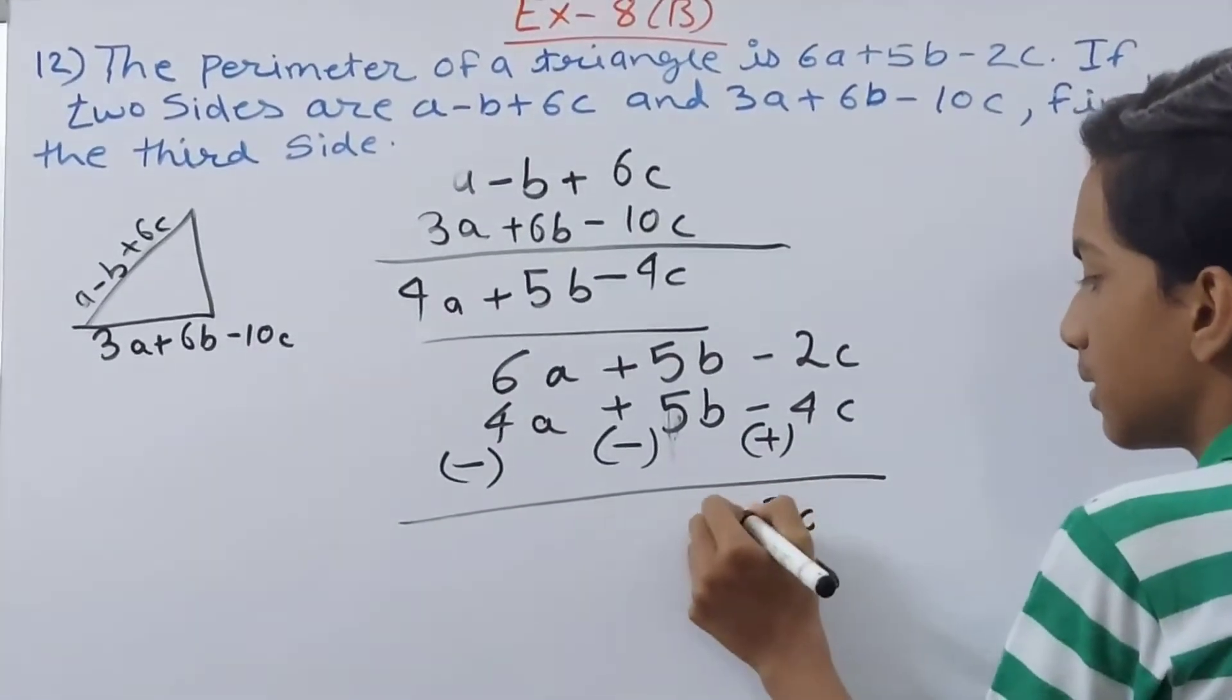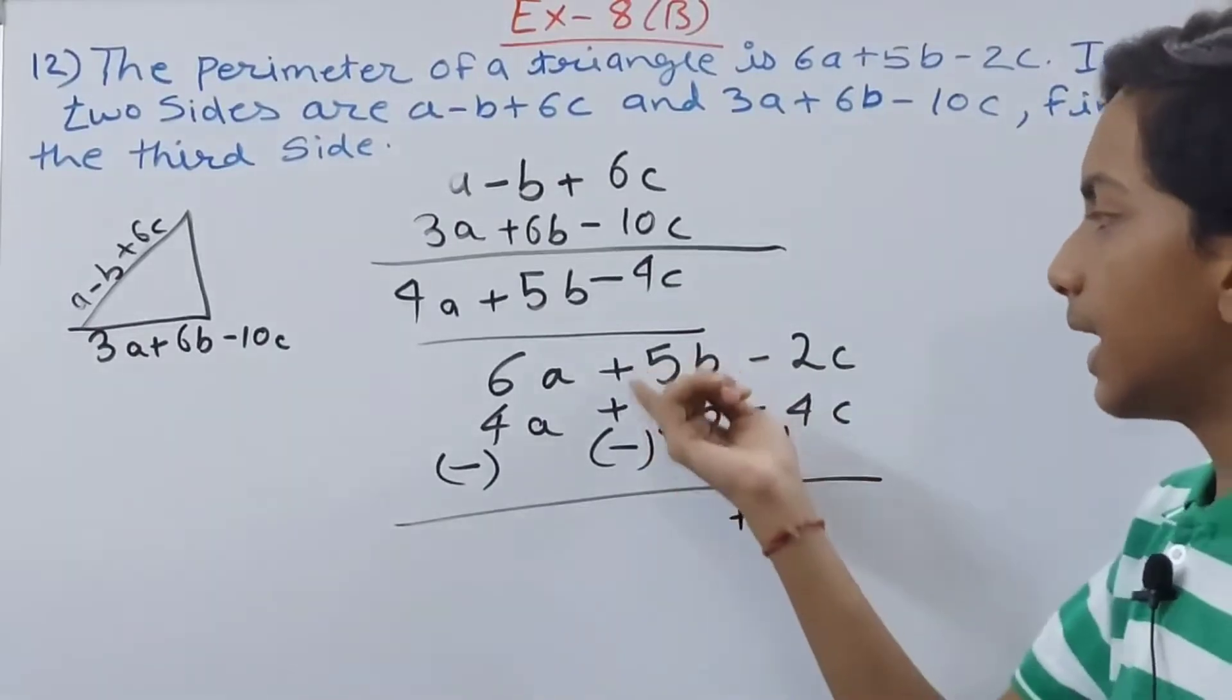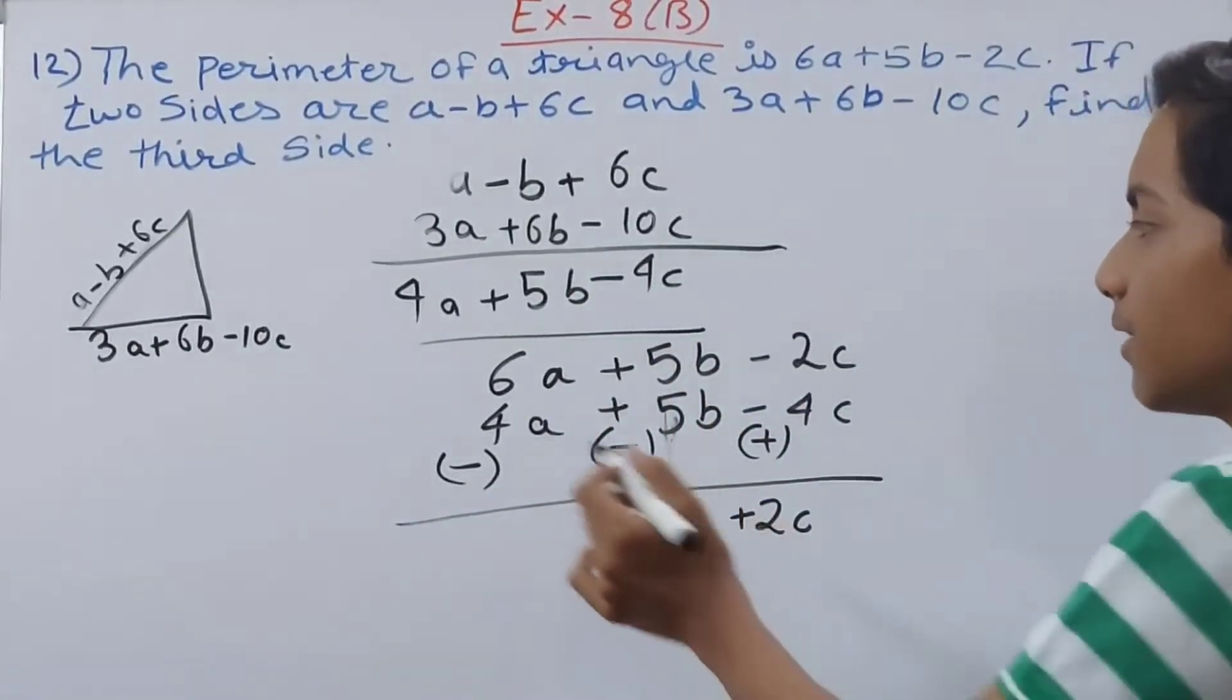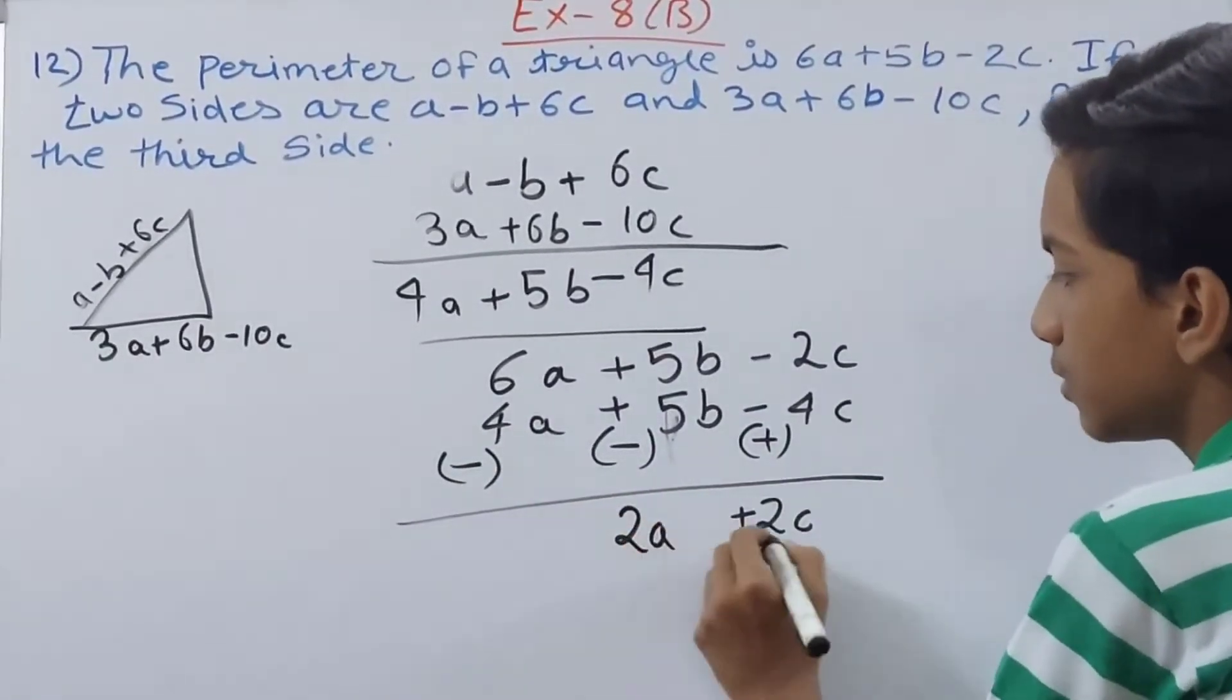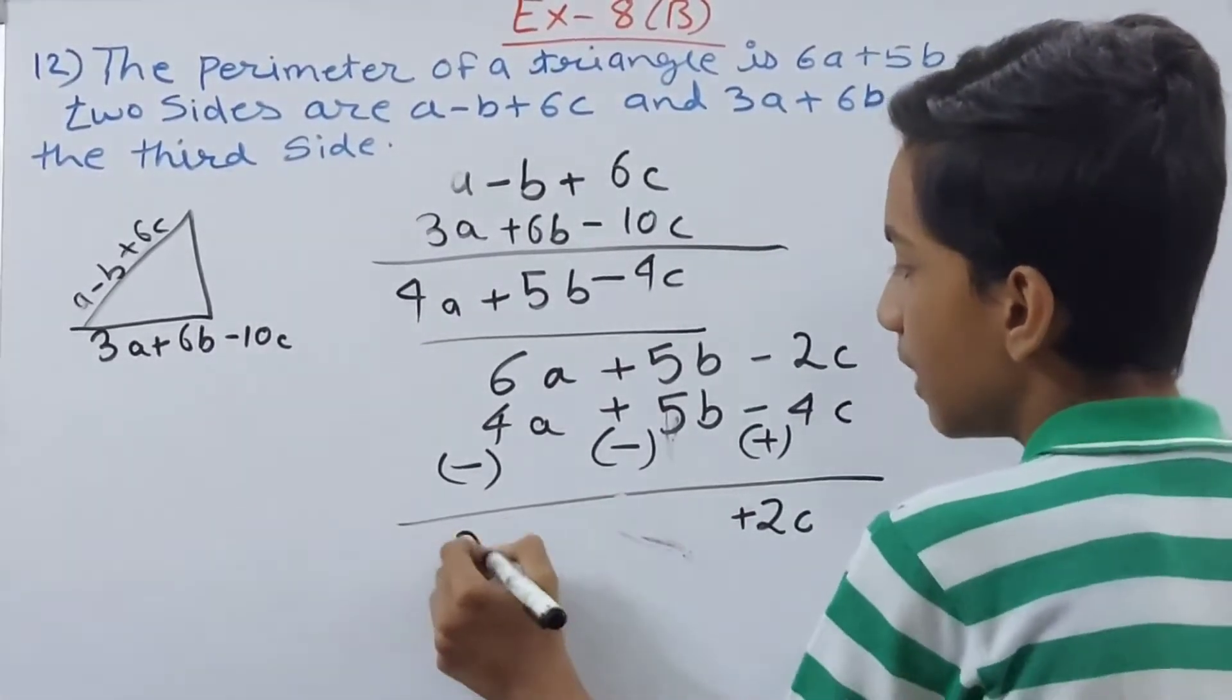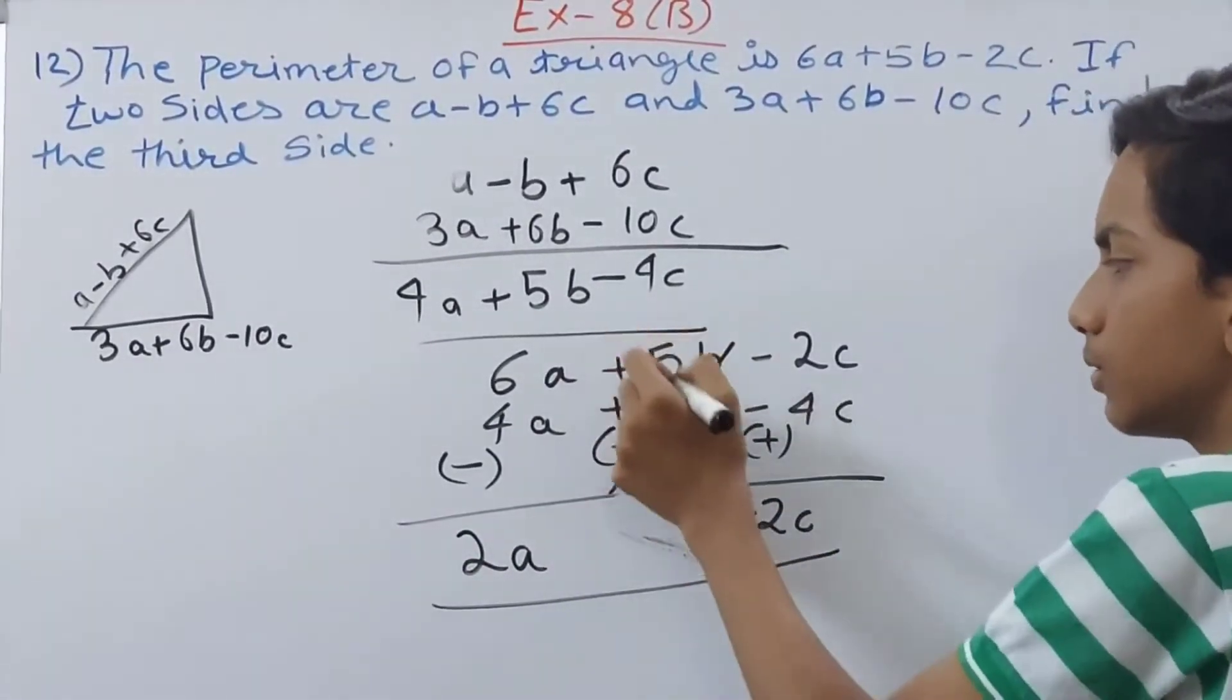So -2c and +4c is going to be +2c. Then +5b - 5b is just 0, so no need to write that because they have different signs and the number is the same, so cut it. And then we have 6a - 4a, that is going to be 2a. So 2a + 2c.